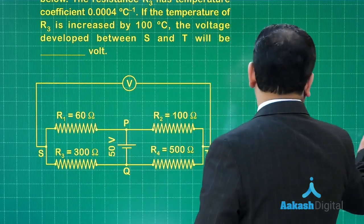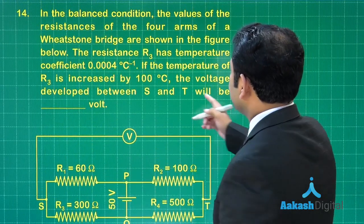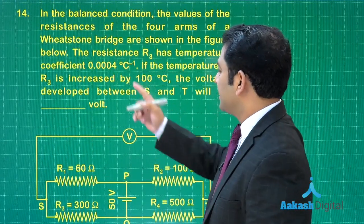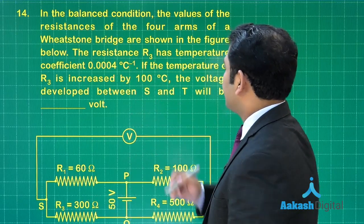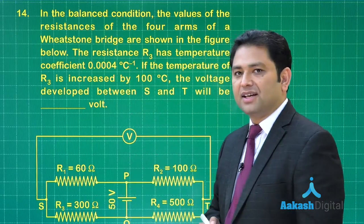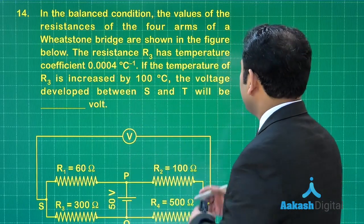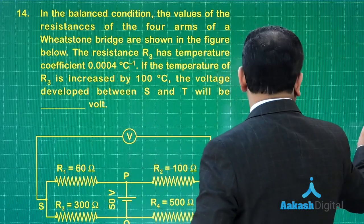Now what does it say? Let us try to understand here. The resistance R3 has temperature coefficient, so the alpha is given there, and the temperature has been increased by 100 degree. Now we need to calculate the voltage developed between s and t.